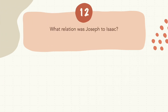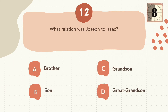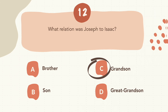Question 12: What relation was Joseph to Isaac? The correct answer is C, grandson.